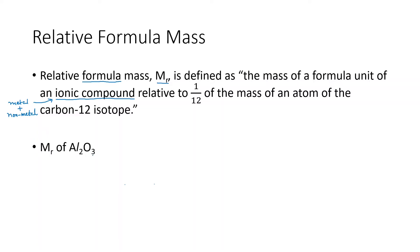For example, for aluminium oxide: aluminium has a relative atomic mass of 27, and oxygen has a relative atomic mass of 16. So we calculate 2 times 27 because we have 2 aluminiums, plus 3 times 16 because we have 3 oxygens. This gives us 102. This is a much bigger mass than the carbon-12 atom. Same method as molecular mass, just a difference in the wording.